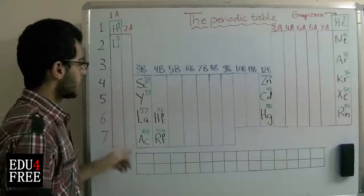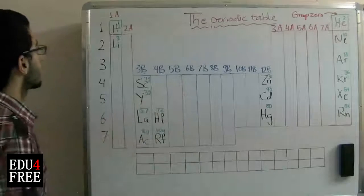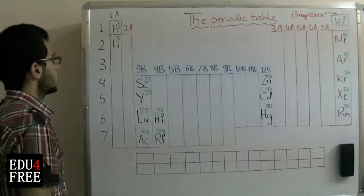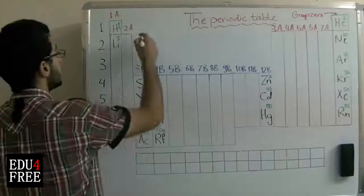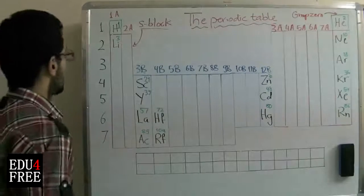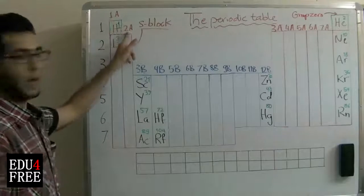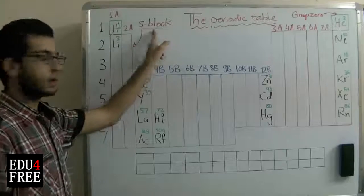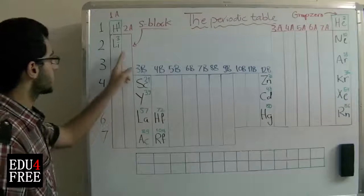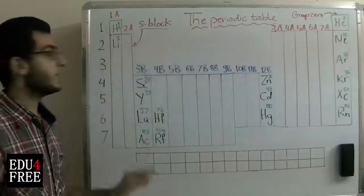Then we go to the vertical groups. These are called groups. Let's take the first two groups, which are collectively called the S block. It contains group 1A and group 2A. It's called the S block because the outermost energy sublevel in the elements found in group 1A and group 2A contains the S sublevel.